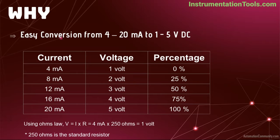Why do we need to convert 4 to 20 mA into voltage? The 4 to 20 mA signals are connected to analog input modules of the PLC. The analog input module consists of analog to digital converters, ADC. This ADC needs voltage as an input signal and converts it into equivalent binary signals, 1s and 0s. The analog input module then provides the equivalent binary signals to the PLC processor, CPU, for further operations.